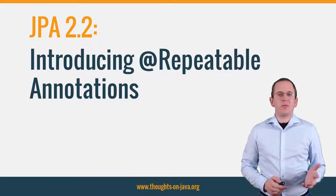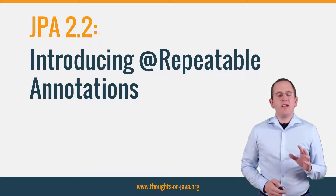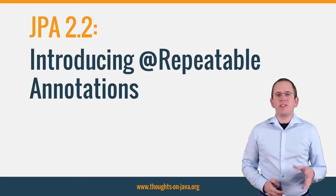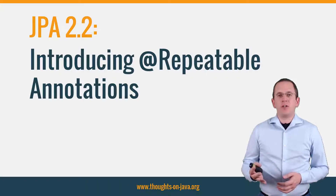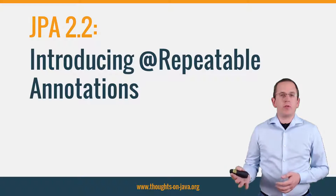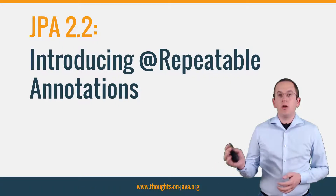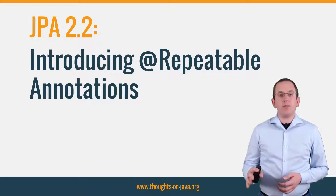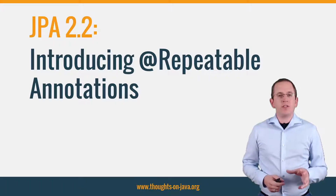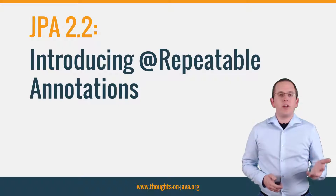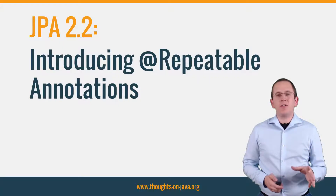Hi, I'm Torben Janssen from thoughtsonjava.org. JPA 2.2 was just a small maintenance release, but it nevertheless brought some interesting changes. You probably already know about some of the new features, like the retrieval of a query result as a stream or the support for classes of the Date and Time API. These are the most popular changes, but not the only ones — JPA 2.2 also introduced a few smaller features that make it easier to use.